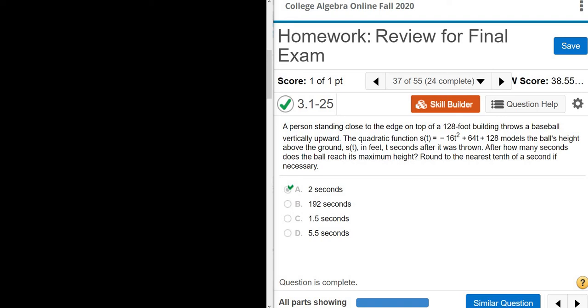A person standing close to the edge on top of a 128-foot building throws a baseball vertically upward. They tell us that this function here models the ball's height above the ground. It says after how many seconds does it reach its maximum height, and they tell us to round to the nearest tenth, which is one decimal.